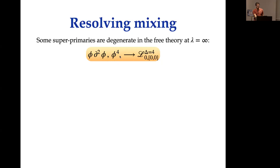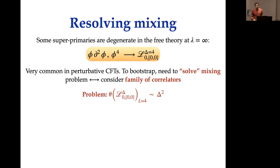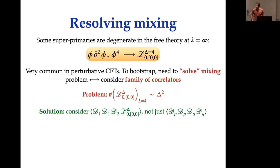To understand the mixing better, consider states of dimension four. Using the field phi, you can build two operators: one with four phis and one with two phis and two derivatives — these have the same strong-coupling dimension. The typical way to resolve this is to consider not just one correlator but a whole family of correlators. The key problem here is that the number of degenerate states grows with delta-squared rather than linearly, unlike in holographic N=4 super Yang-Mills or (2,0) theory.